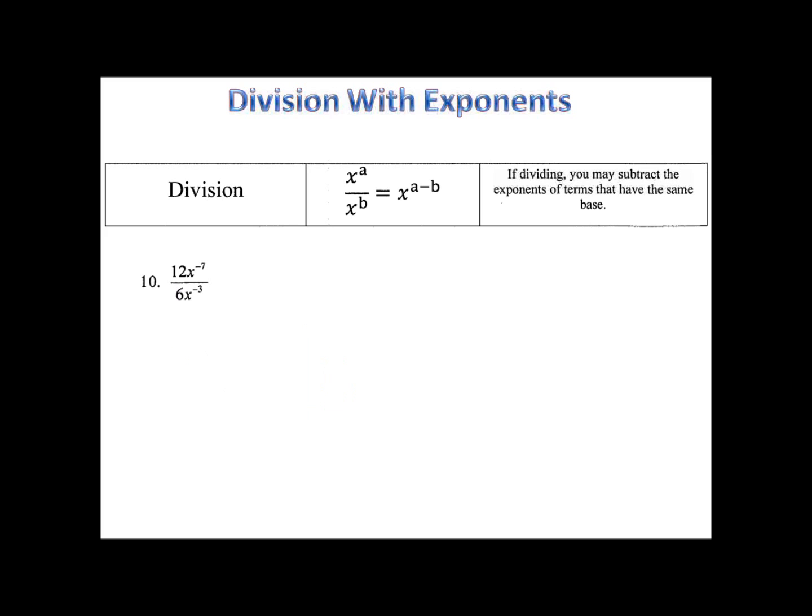Take a look at number 10. Oh boy. Here we have some division and we have negative exponents. Few ways you could approach this, but my favorite way is to just take the things and move them around so that my exponents are positive. I'll move my x to the third up top and my x to the seventh down the bottom. Notice that the coefficients, the 12 and the 6, stayed right where they were.